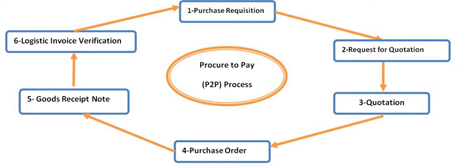After the Goods Receipt Note, the vendor supplies the invoice with respect to the GRN. We then perform Invoice Verification using transaction code MIRO. In MIRO we can also issue credit memos for material reversals or perform invoice reversals.